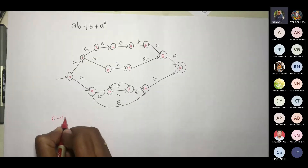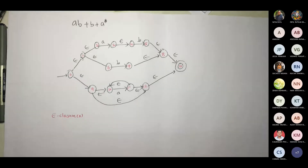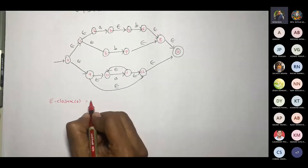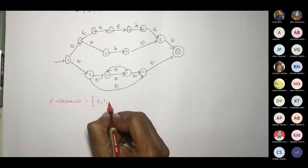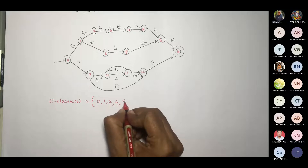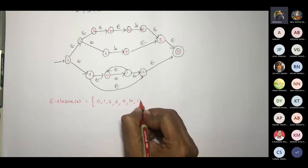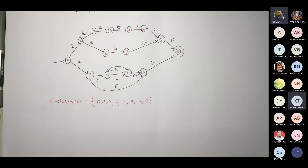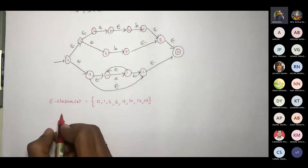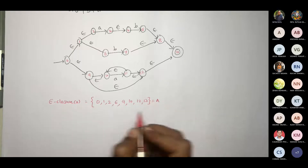Now what is the epsilon closure of 0? So we are constructing now DFA using subset construction. So 0, 1, 2, 6, 9, 10, 12 and 13. Correct? So let us work out this.